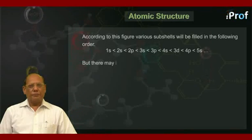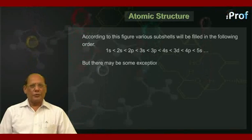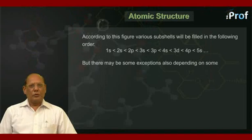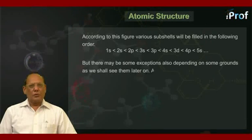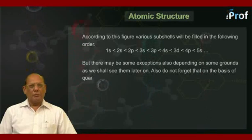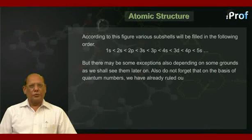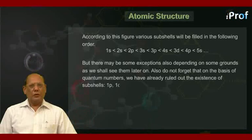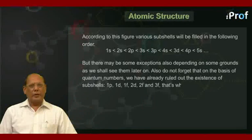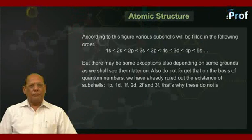But there may be some exceptions also, depending on some grounds, as we shall see them later on. Also, do not forget that on the basis of quantum numbers, we have already ruled out the existence of subshells 1p, 1d, 1f, 2d, 2f, and 3f. That's why these do not appear in the above figure.